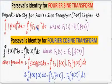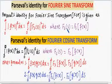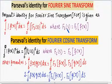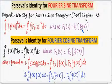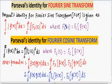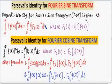Fs(s) the whole squared ds, where Fs(s) is the Fourier Sine Transform of f(x). So the Parseval's identity for the Fourier Sine Transform states that the integral of |f(x)|² equals the integral of |Fs(s)|².